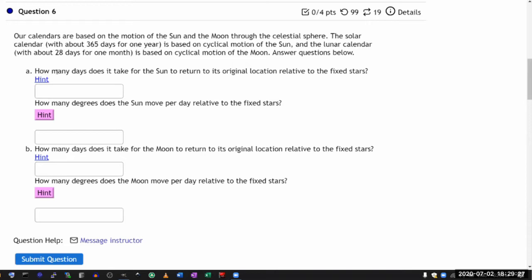So in terms of how many days does it take for the sun to return to its original location relative to the fixed stars? And what it means is, so it's kind of hinted at the hint there. It's 365 days.